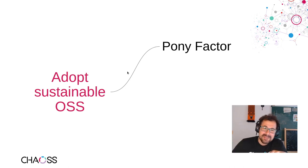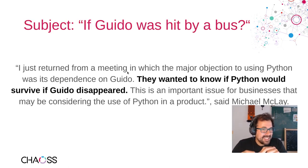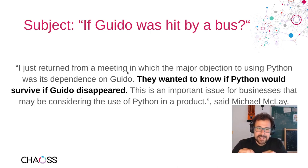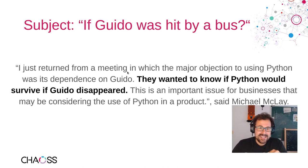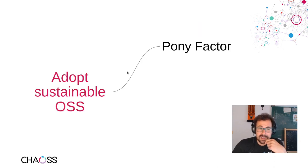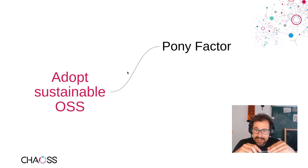The history around the Bus Factor is worth mentioning. In 1994, on the Python mailing list, someone sent a message talking about Guido — Guido is the creator of the Python programming language. In a business meeting, some people wanted to know what would happen to the Python community without Guido. The subject was: 'If Guido was hit by a bus, what is going to happen?' This is how the Bus Factor was formed for software projects.